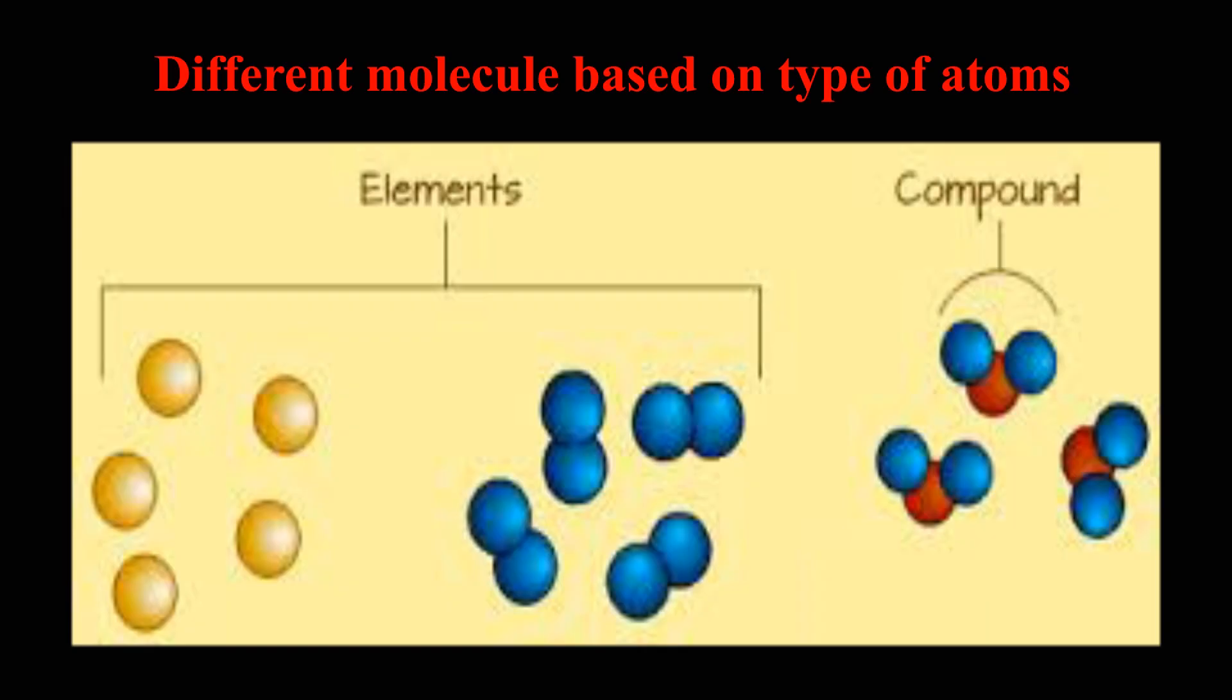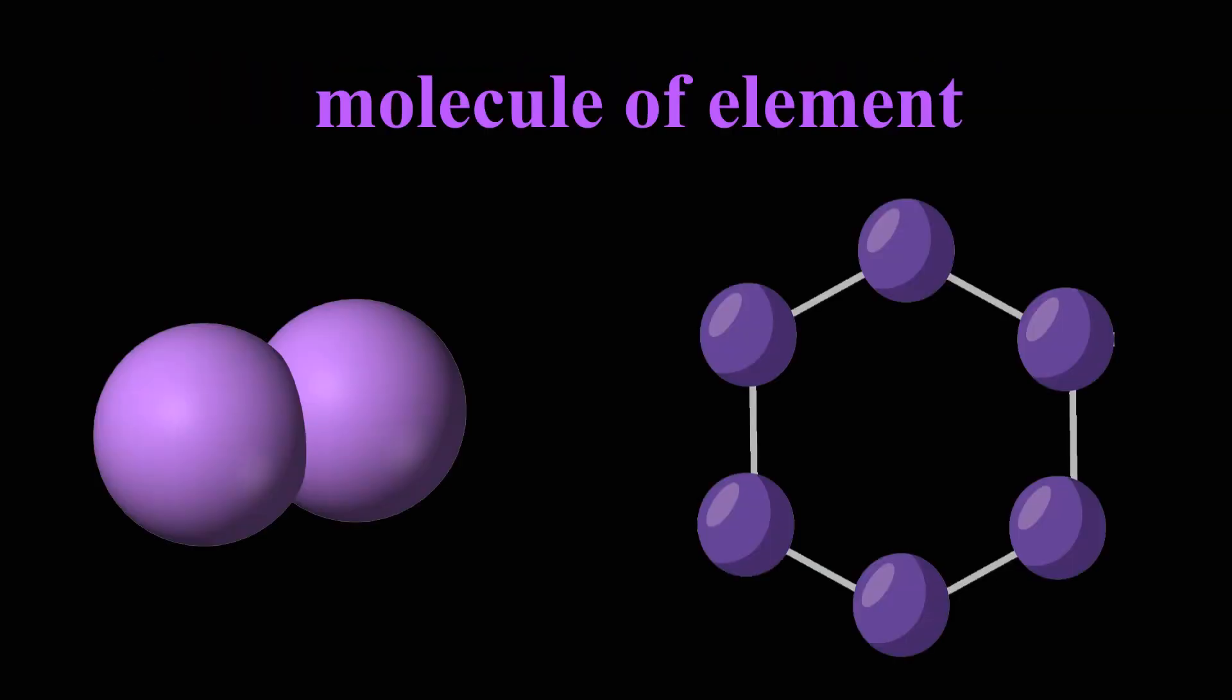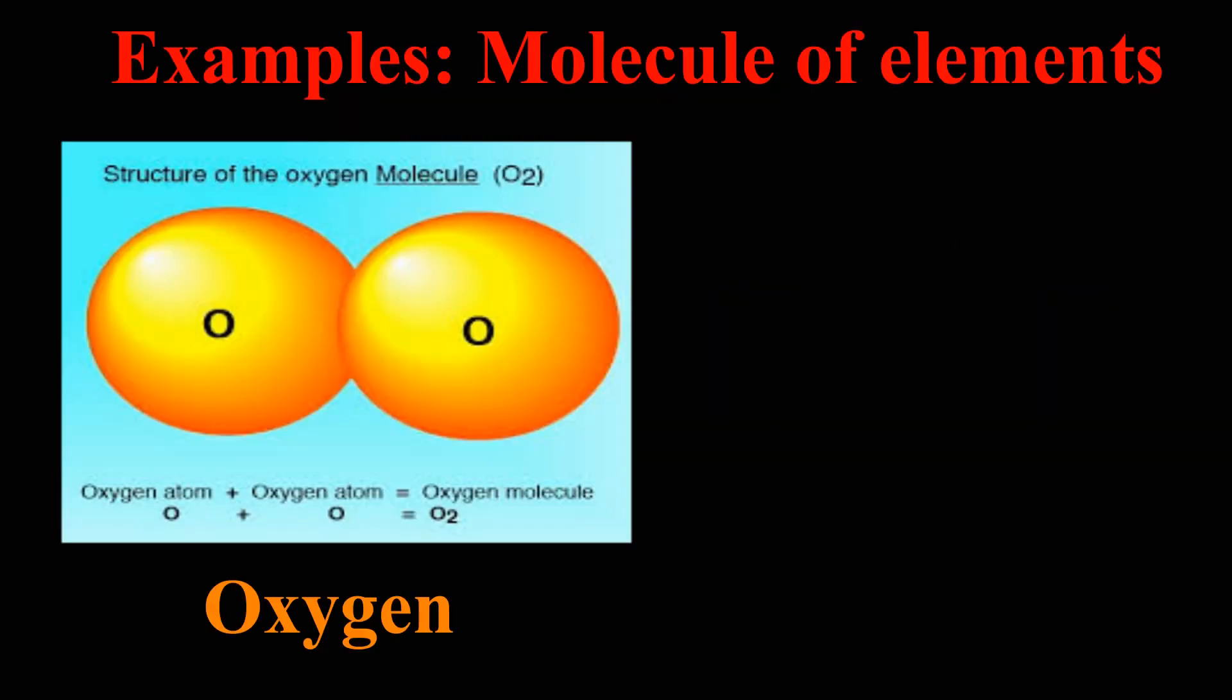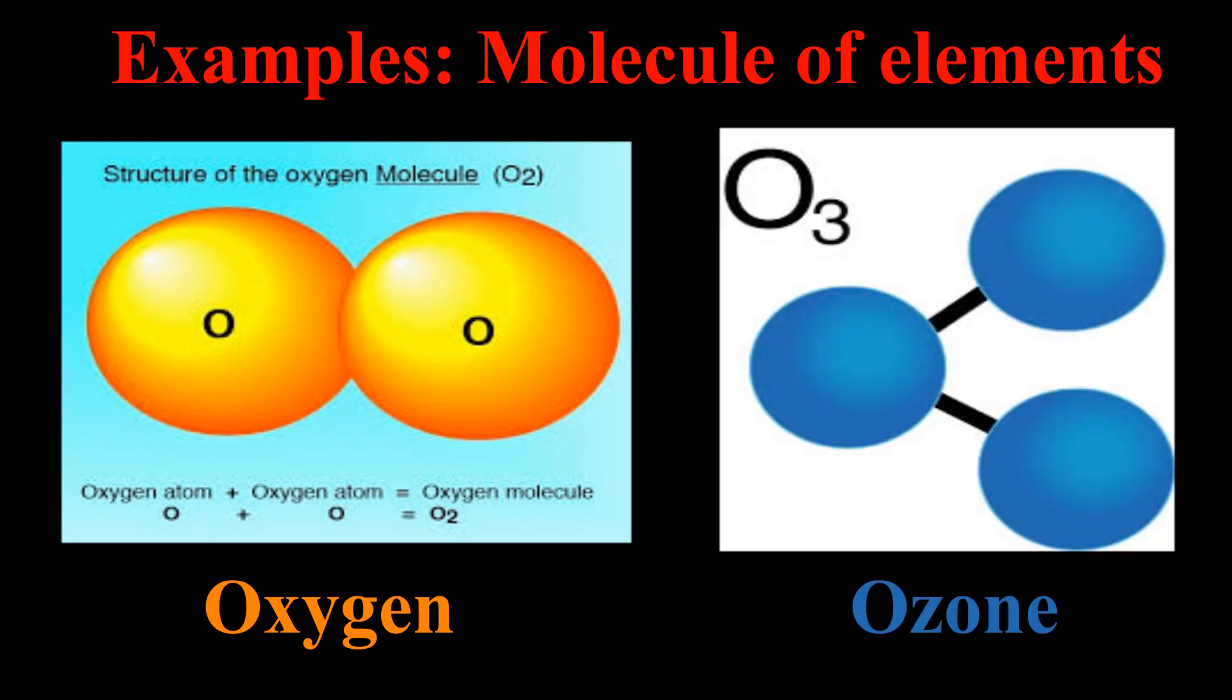Now let's learn about different molecules based on type of atoms. When a molecule is comprised of the same type of atoms, it is called a molecule of elements. Oxygen has two oxygen atoms, ozone has three oxygen atoms. Both oxygen and ozone are molecules of elements.